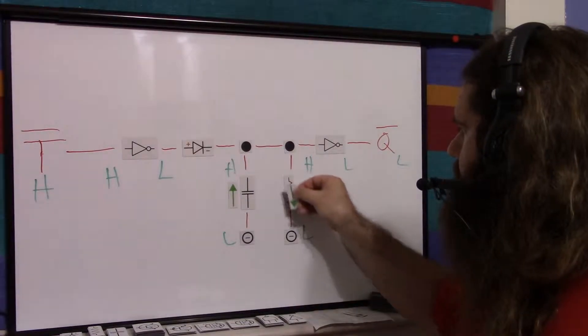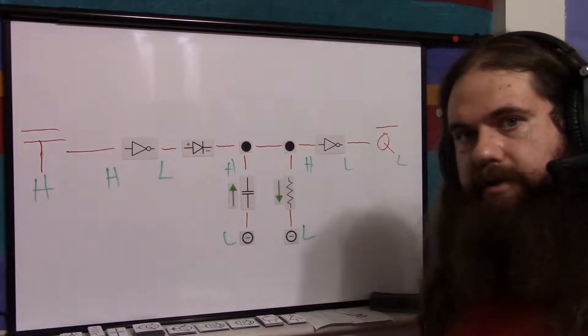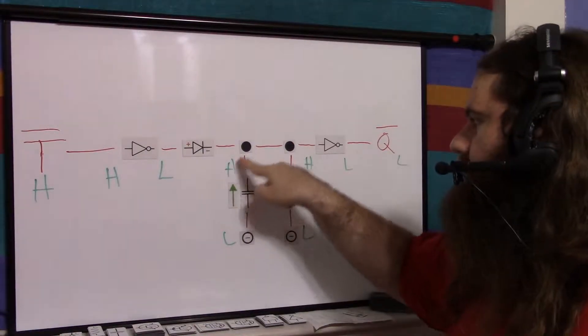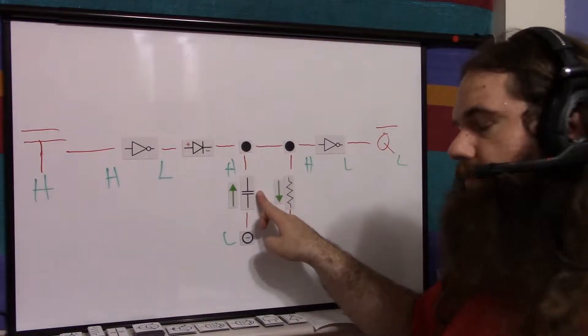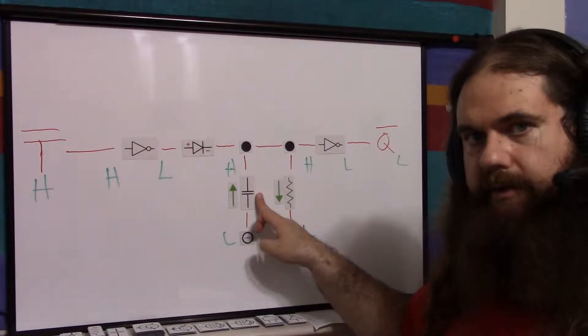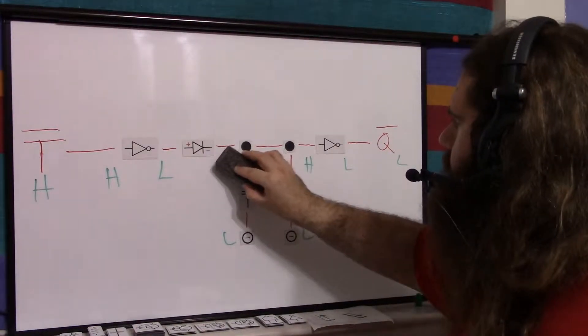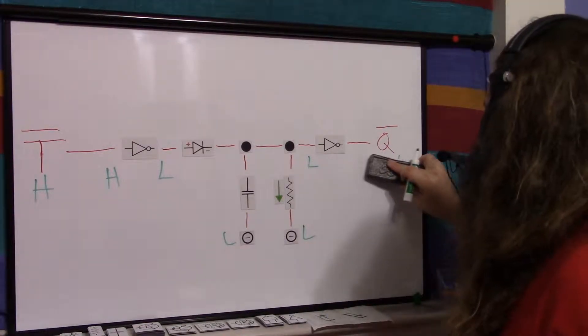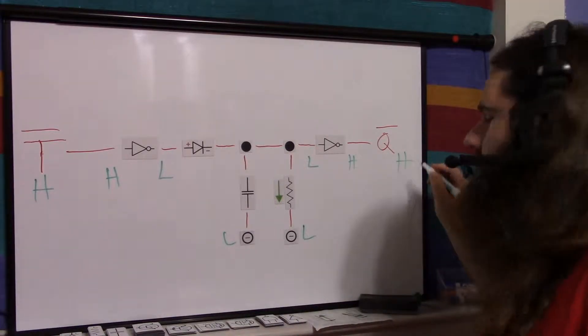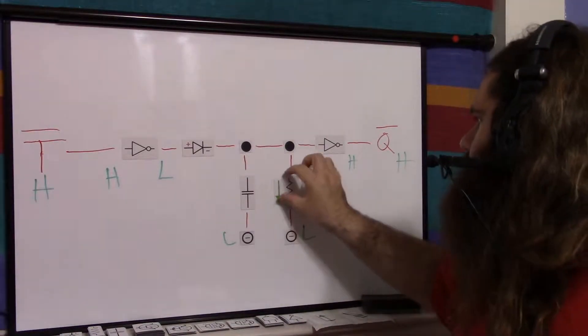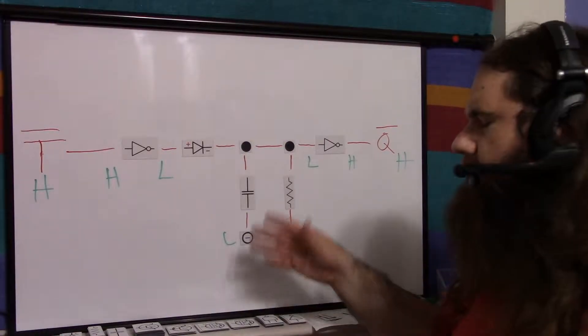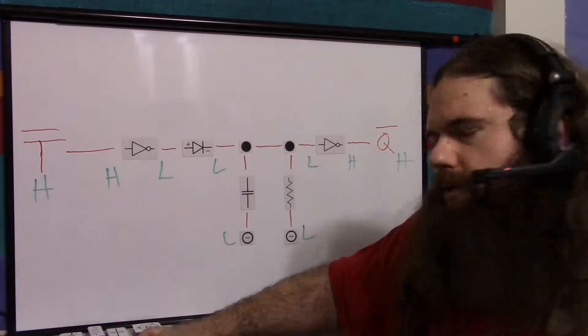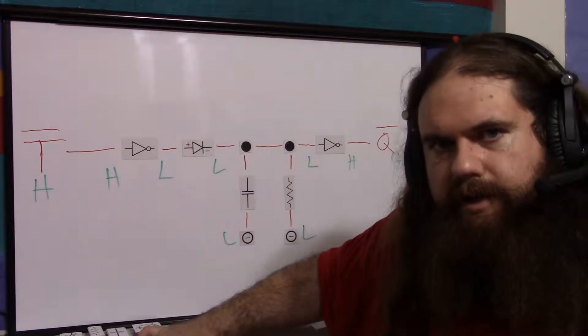So the resistor actually does still have current going across it, which means it still has a voltage drop, which means this is still high right here, because now the capacitor is generating the high. But eventually, the capacitor is going to run out of power. It's going to provide so little that this gate is going to turn off. So this inverter is going to get a low, which means it's going to put out a high, and the output will be high. So then the capacitor fully discharges, the resistor stops conducting again, and everything's back where it started.